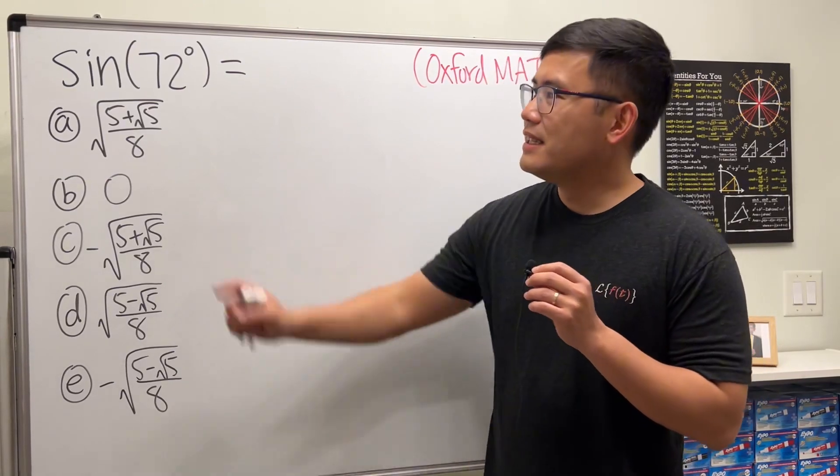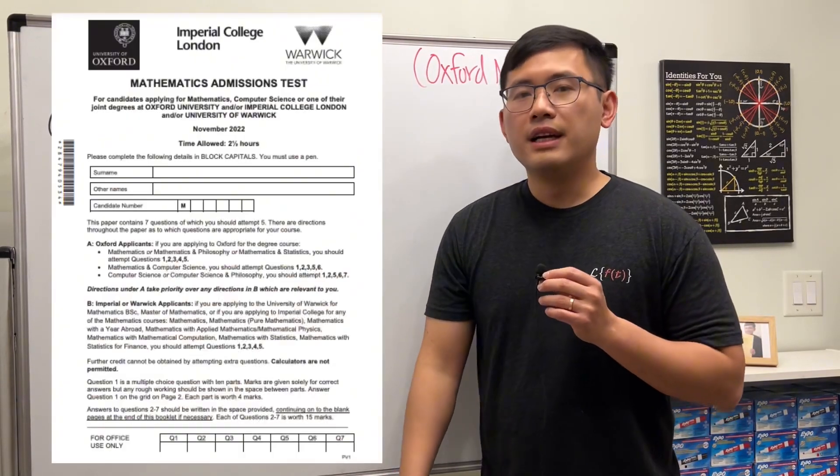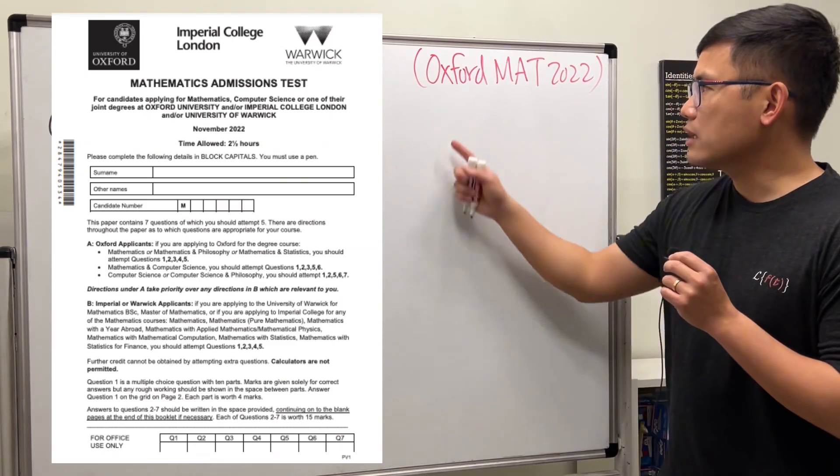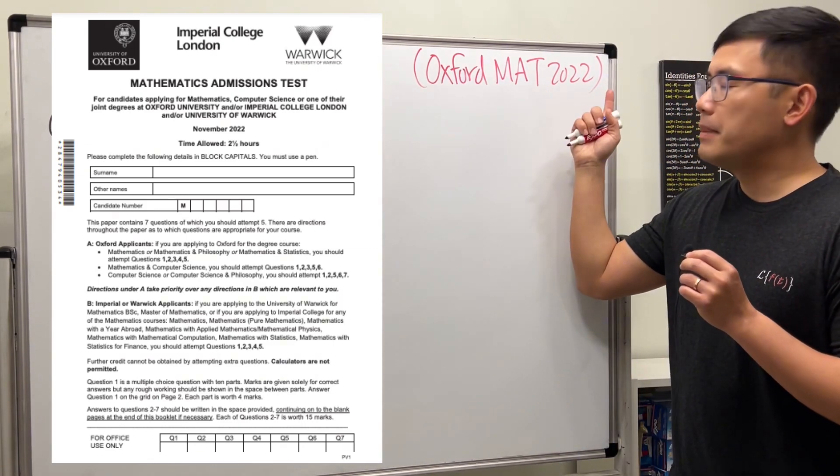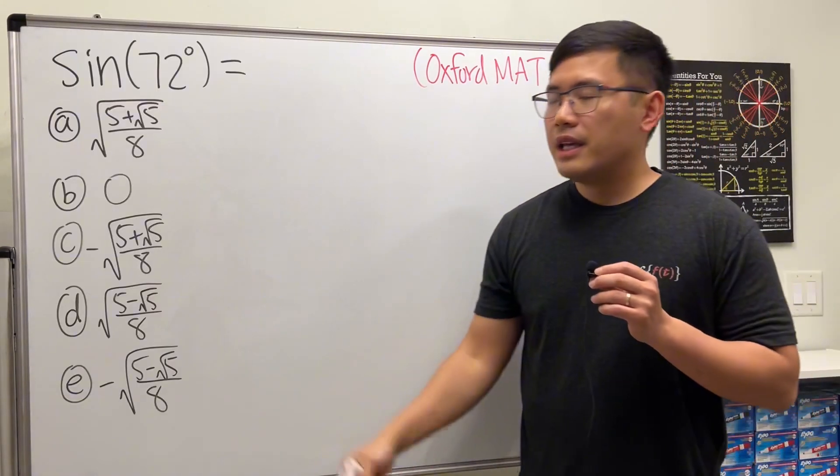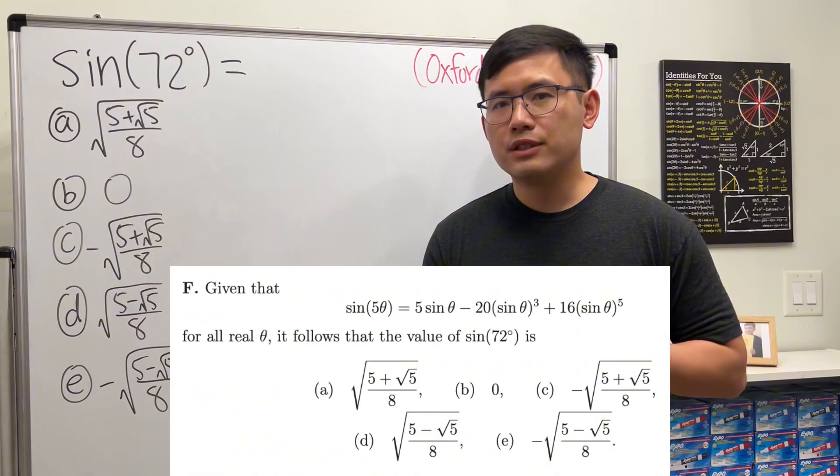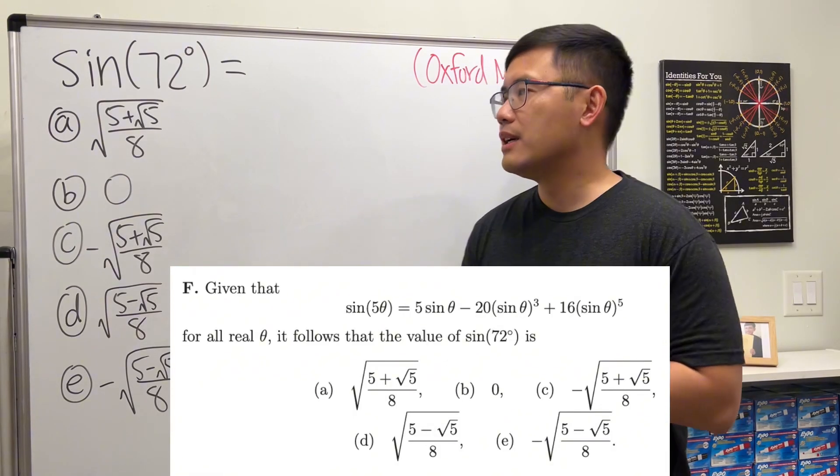Okay, today let's revisit sine of 72 degrees. This question is from the University of Oxford Math Admission Test back in 2022. It was in a multiple choice format, so we can totally use the answer choices.